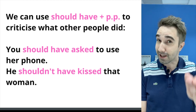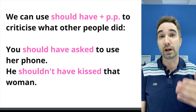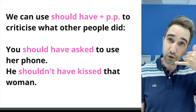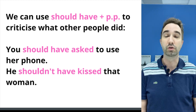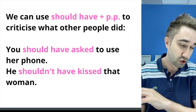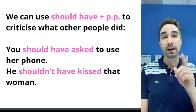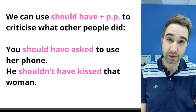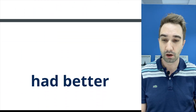We can also use should have to criticize what other people did. For example: 'You should have liked this video at the beginning,' or 'You should have asked to use her phone' — maybe you took it without asking and she was angry. Or: 'He shouldn't have kissed that woman.' So I can criticize myself or criticize another person using should have or shouldn't have.